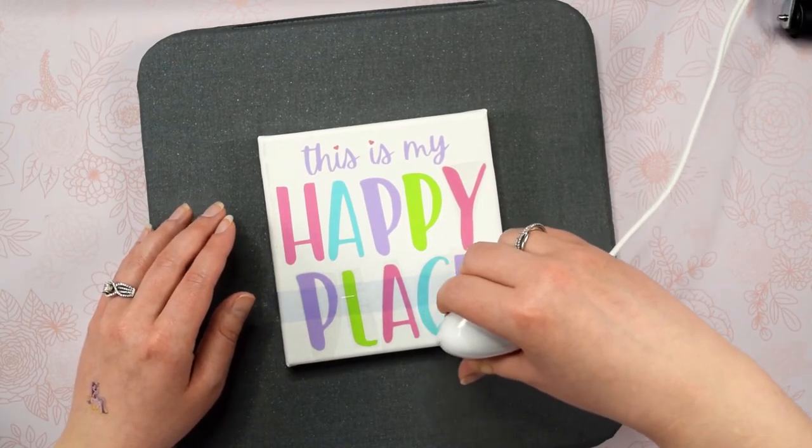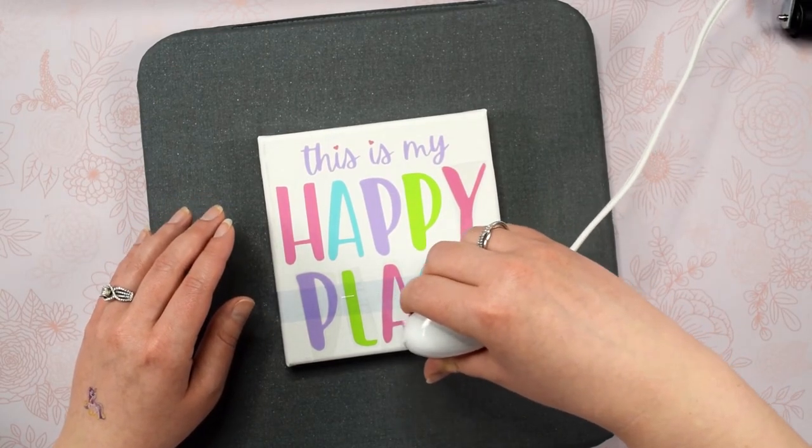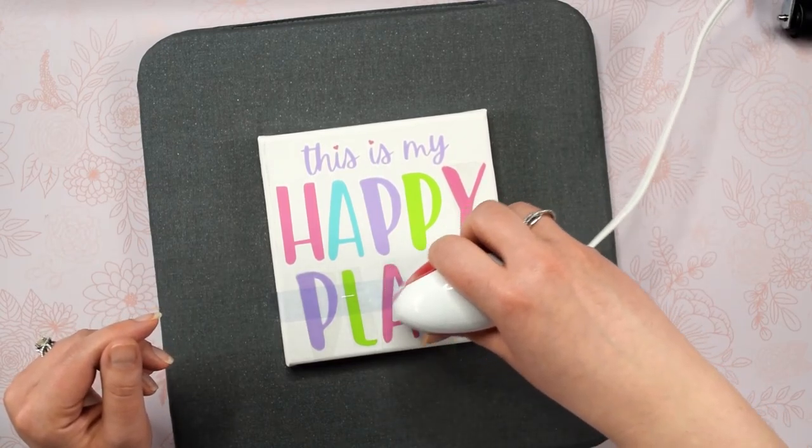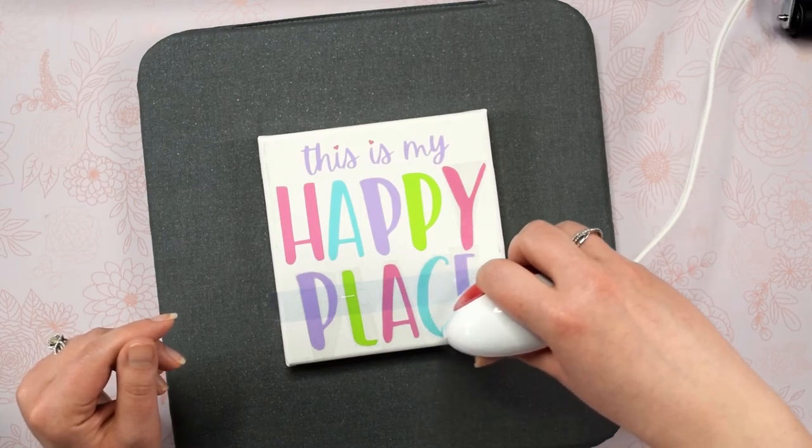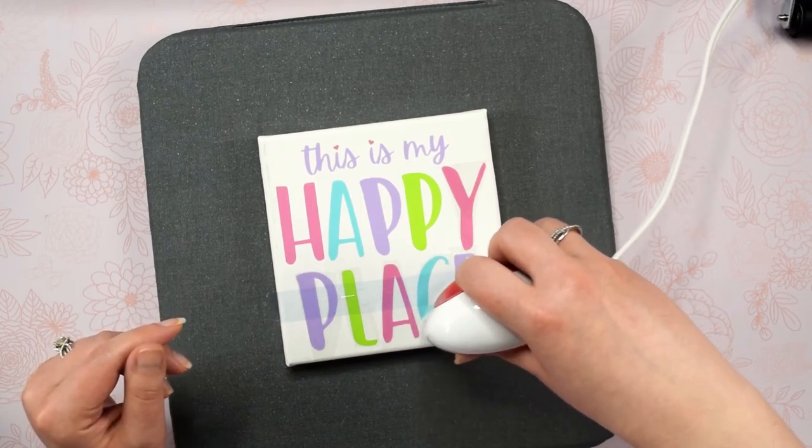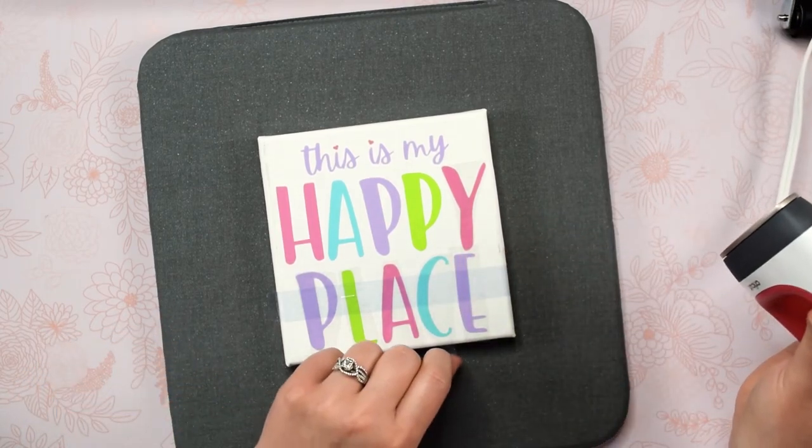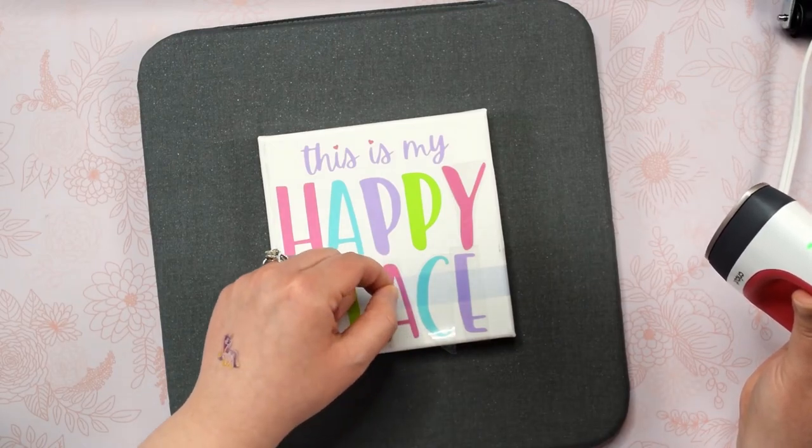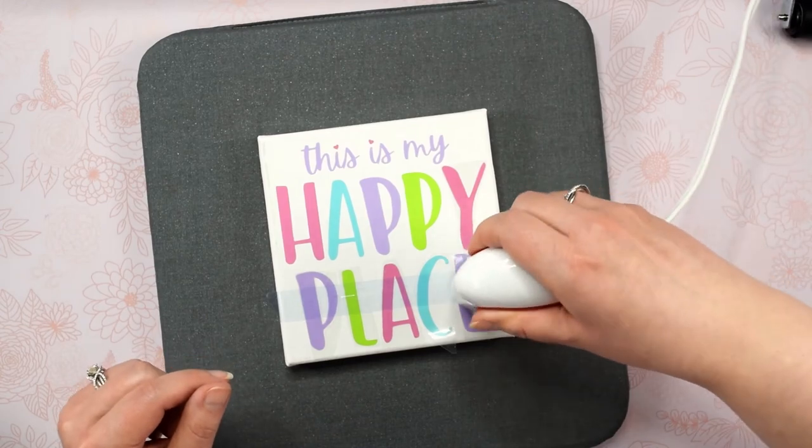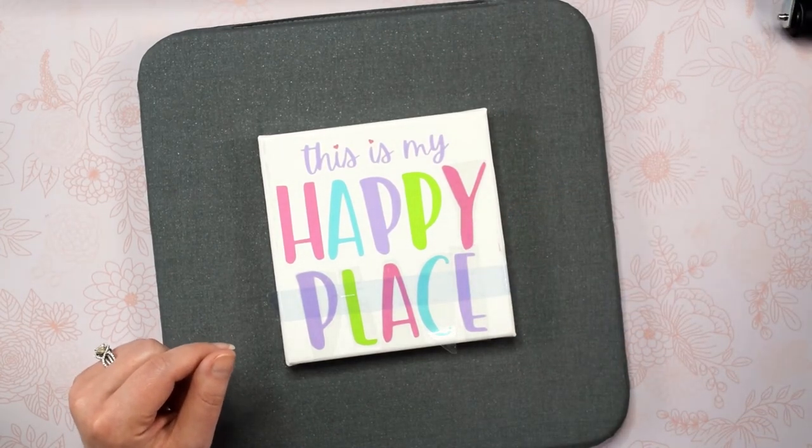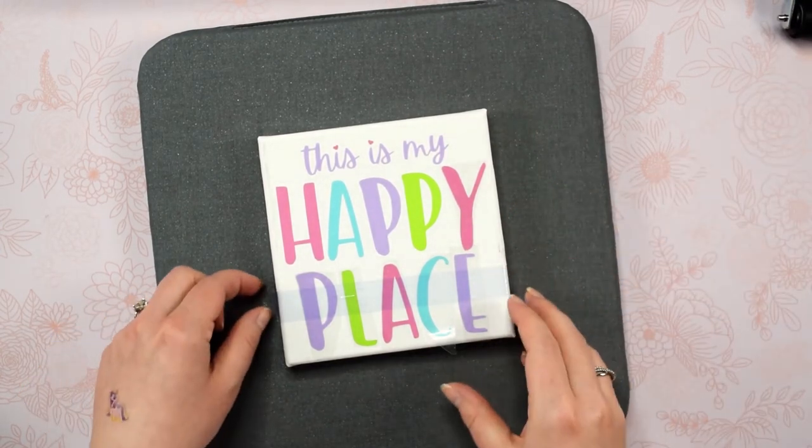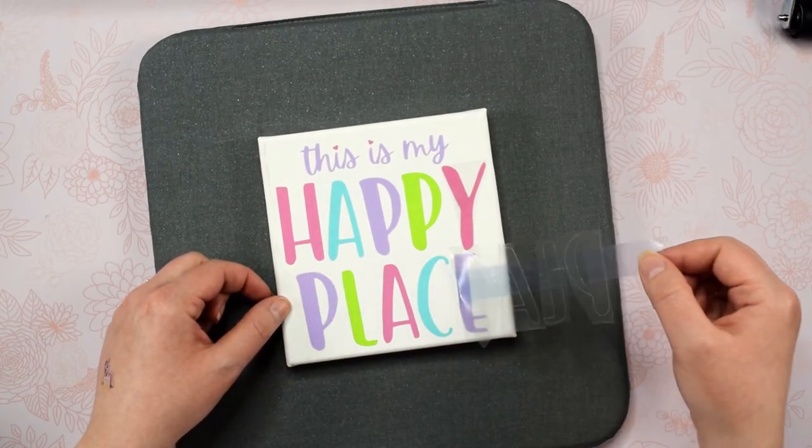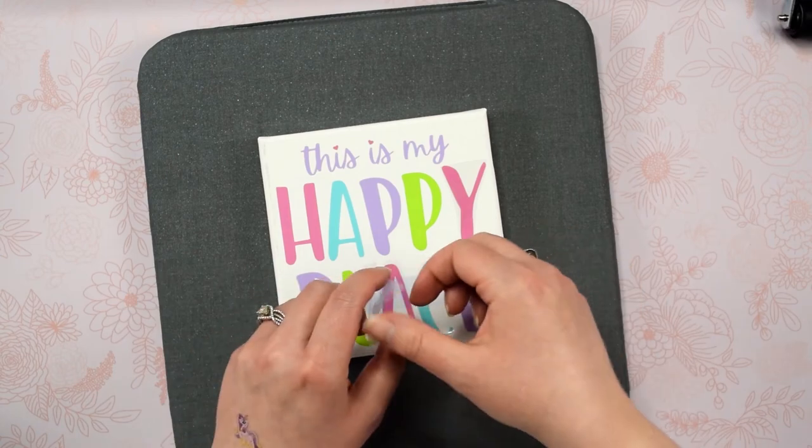So what I did was I used my large EasyPress with the protective sheet to get the majority of the design adhered. Then I went back through with my EasyPress Mini on a few of the spots that weren't quite adhered. If you are using a larger canvas, I recommend folding a small towel to place underneath the center of the canvas so that the center of the design can get more evenly heated. The type of HTV I'm using is a warm peel, meaning you have to peel the plastic sheet away from the design while it is warm.